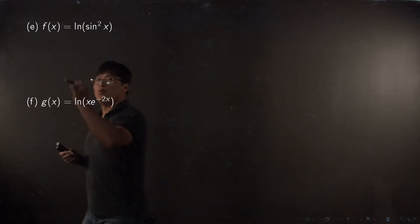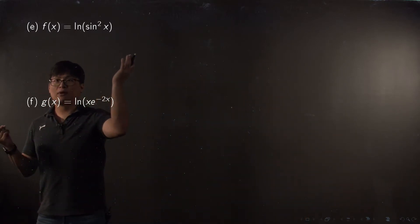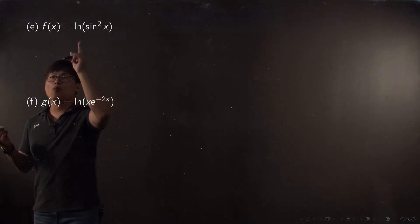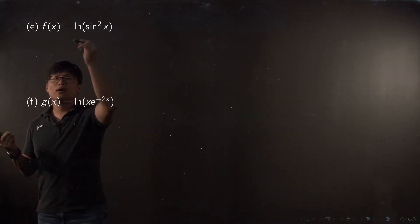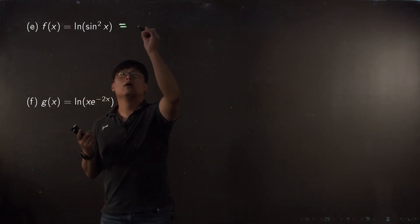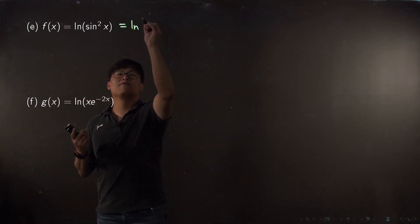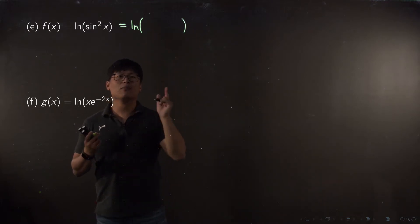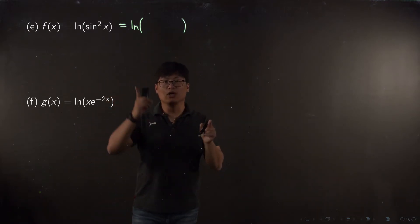What about this one? Definitely we have to start from the chain rule, but you have to realize how many layers there are. Let me rewrite your function this way: f(x) equals log function, which is definitely the outside function, but look at the inside.